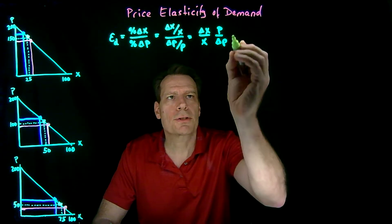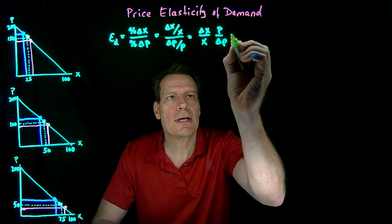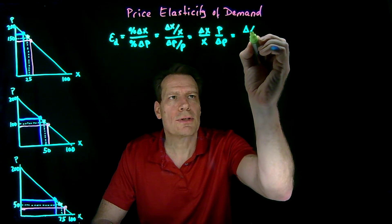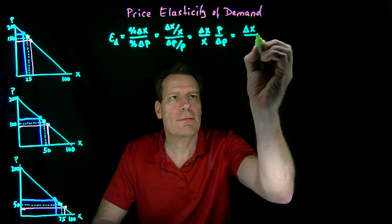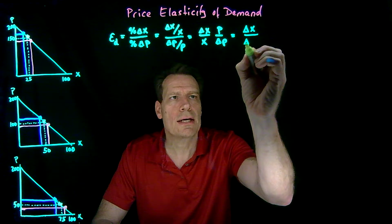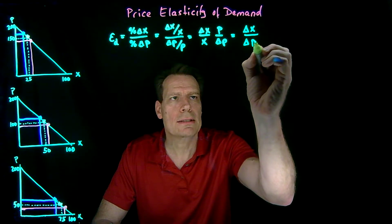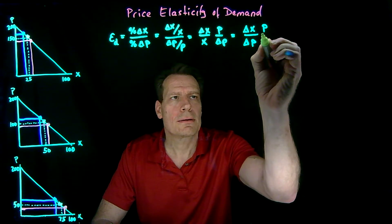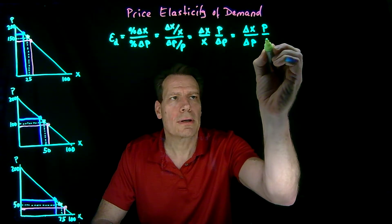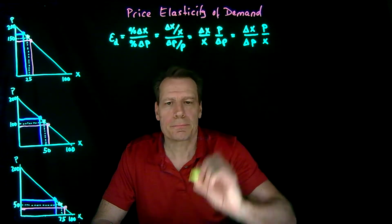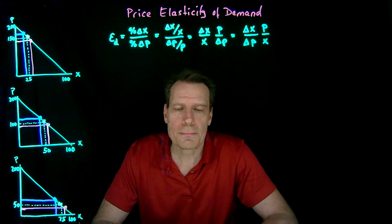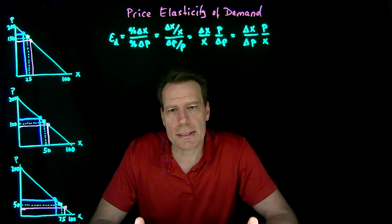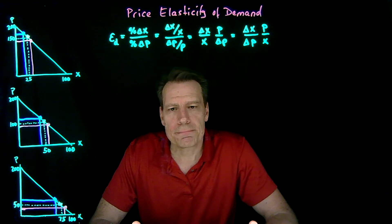Collecting all the changes into one term, we can write this as the change in x divided by the change in price, times price over x. That's the definition of a price elasticity of demand.